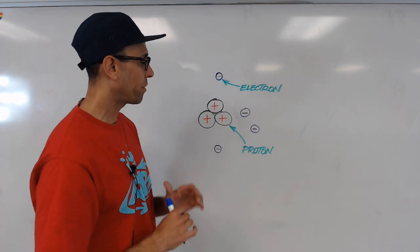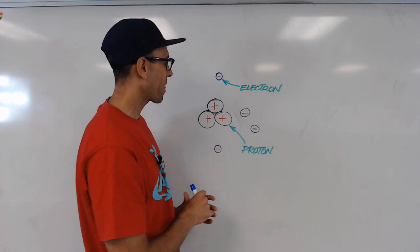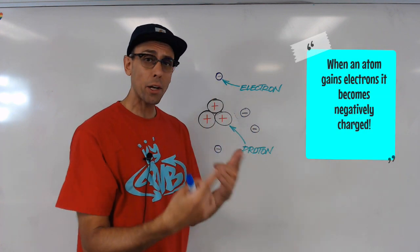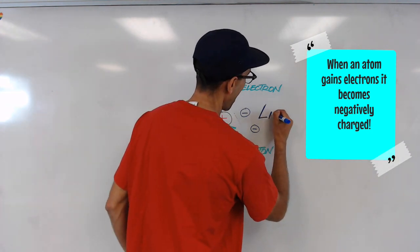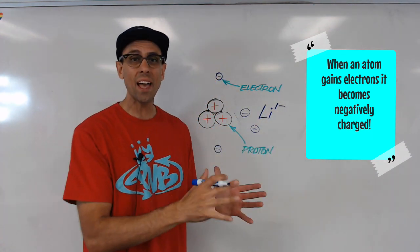So this proton will be canceled out by that electron, and this one by that one, and this one by that one. But then there's an extra electron left over, which would give this particular lithium atom a negative charge in its ionic state.